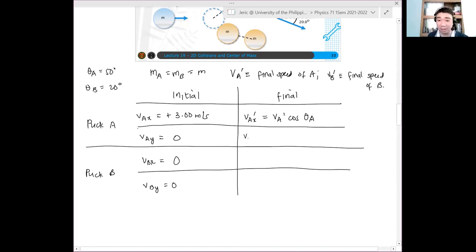On the other hand, what is the final velocity V_A in the y component, V_{Ay} prime? V_A prime sine θ_A. What about the final velocity in the x component of puck B, V_{Bx} prime? V_B prime cosine θ_B. This should be θ_B, not θ_A.